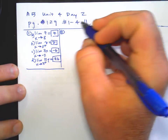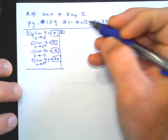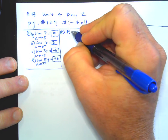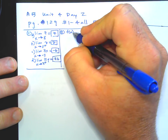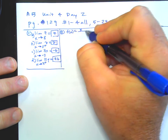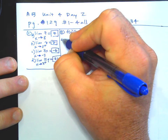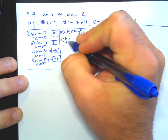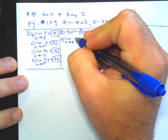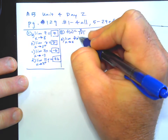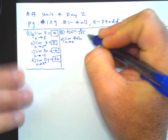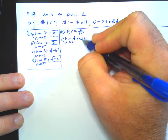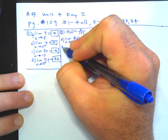Number two says, in each part, find the limit by inspection. Now this is for a specific function: F of X equals X over the absolute value of X. Part A asks what's the limit as X approaches five of F of X. You could just plug five in — five over the absolute value of five is one.